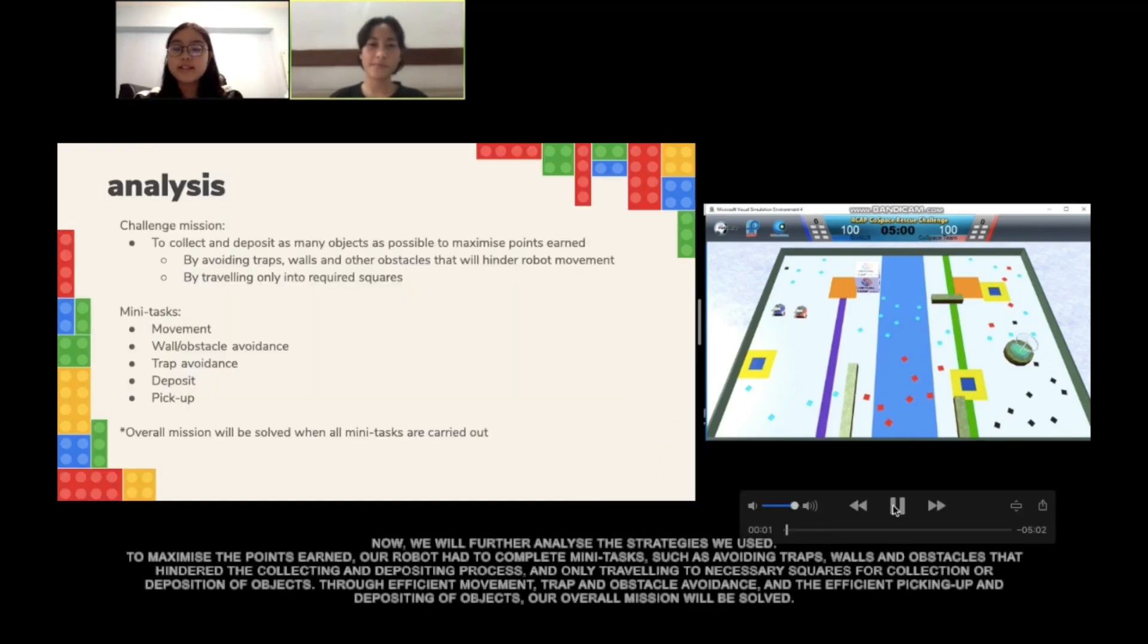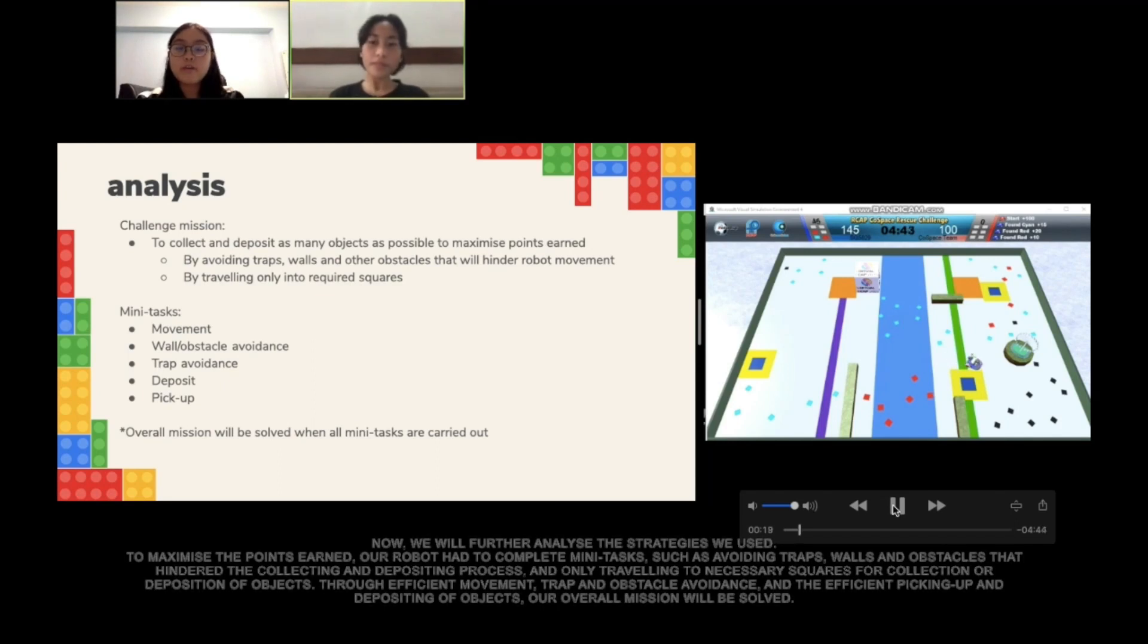To maximize the points earned, our robot had to complete mini tasks such as avoiding traps, walls and obstacles that hindered the collecting and depositing process, and only traveling to necessary squares for collection or deposition of objects. Through efficient movement, trap and obstacle avoidance, and efficient picking up and depositing of objects, our overall mission will be solved.